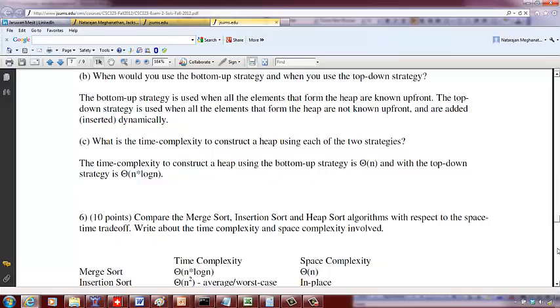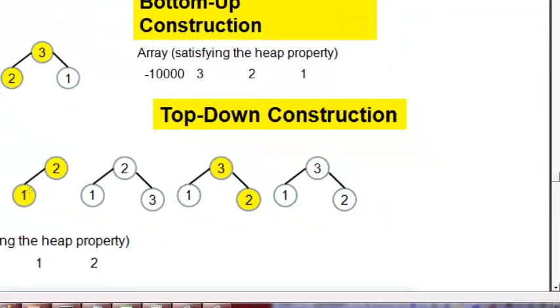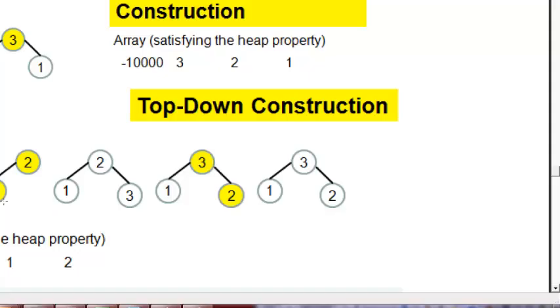What is the time complexity? That's the trade-off because the bottom-up approach is very fast. It takes only theta of n time, whereas the top-down approach, because each time you insert a key you have to rearrange the heap, each insertion rearrangement will take log n time.